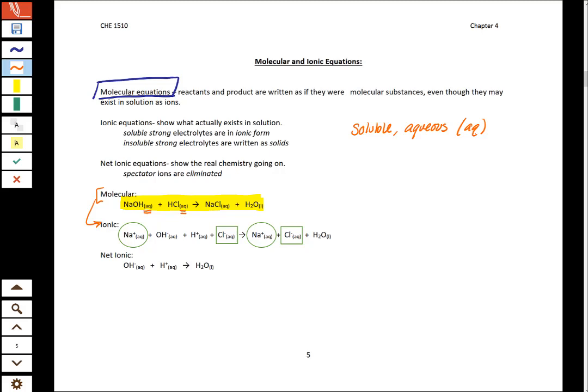Notice how here we have three components that are listed as AQ. When you have something that is ionic and it's listed as AQ, then when you write the ionic equation, you break those into their ions because like we saw in the last video, that's exactly what happens. Those break up into their ions.